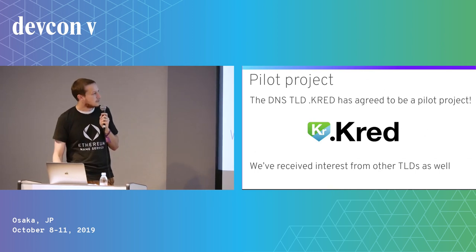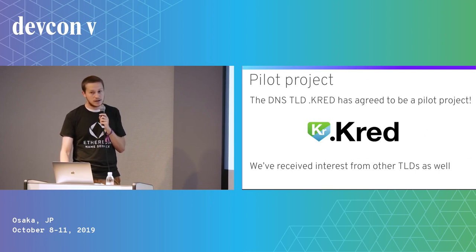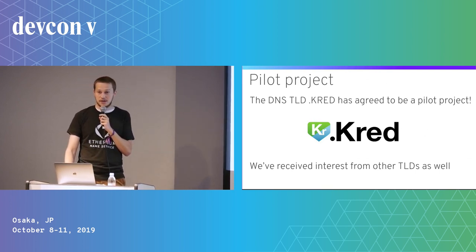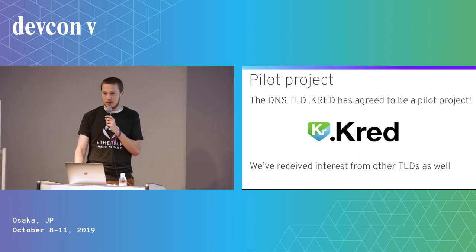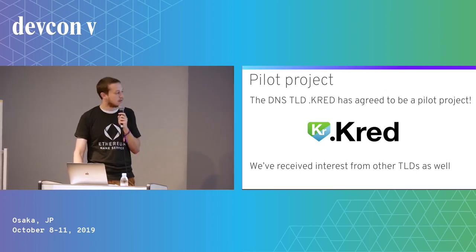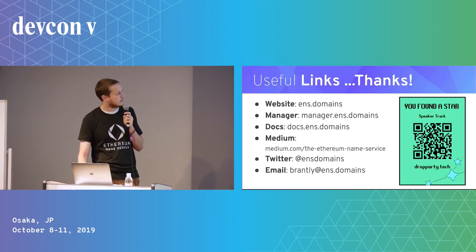We have a project going with .cred as a DNS top-level domain. They have agreed to work with us to build a system using ENS and IPFS to host all of their traditional DNS records for their whole namespace. This would be an incredible first step toward having ENS used for that use case, and we're very excited about it.